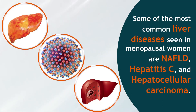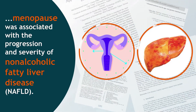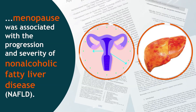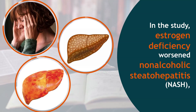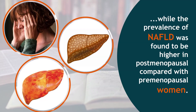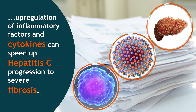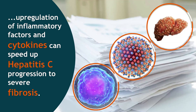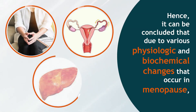Some of the most common liver diseases seen in menopausal women are NAFLD, hepatitis C, and hepatocellular carcinoma. According to a study conducted in 2019, menopause was associated with the progression and severity of non-alcoholic fatty liver disease (NAFLD). Estrogen deficiency worsened non-alcoholic steatohepatitis (NASH), while the prevalence of NAFLD was found to be higher in postmenopausal compared with premenopausal women. Another study showed that the upregulation of inflammatory factors and cytokines can speed up hepatitis C progression to severe fibrosis.